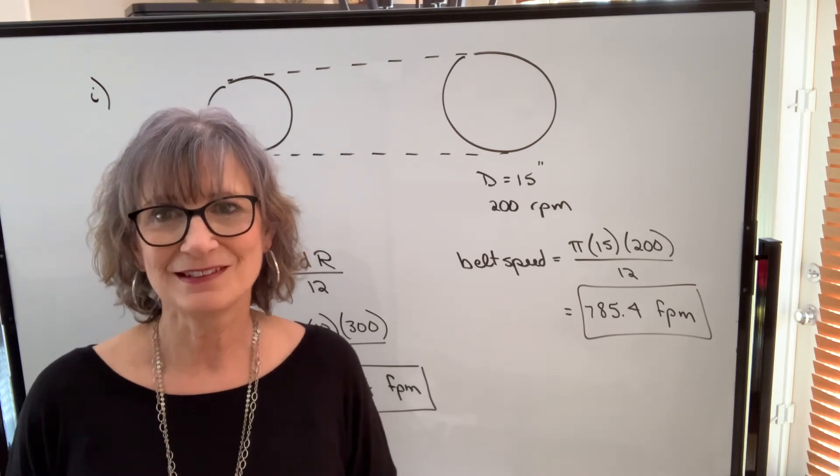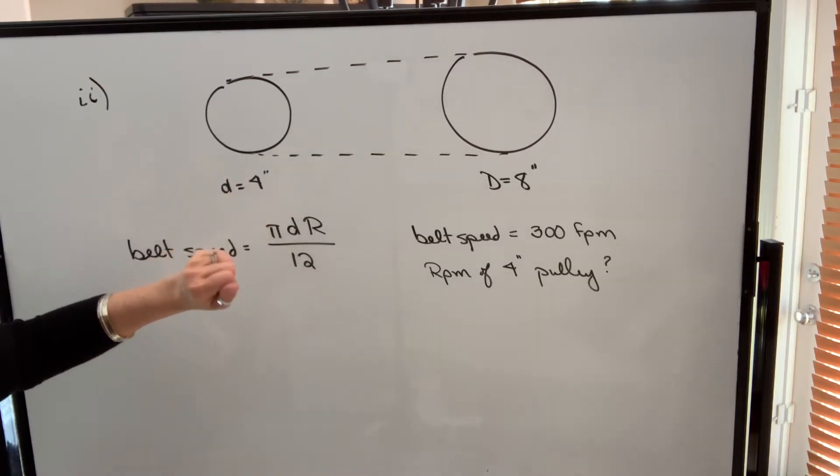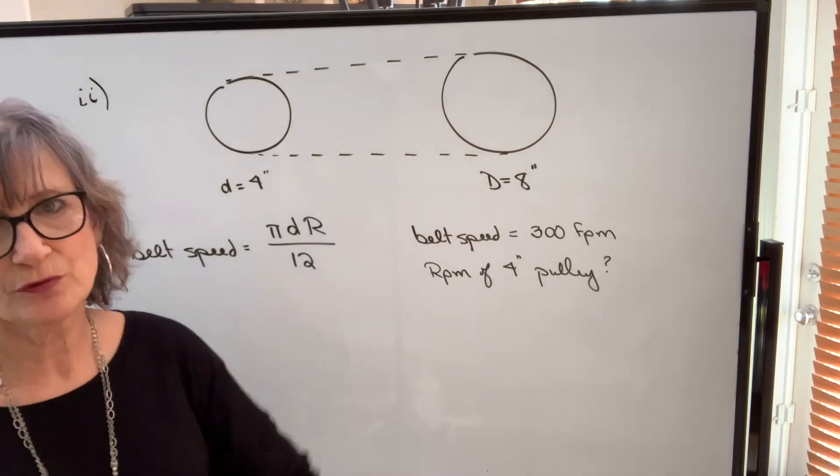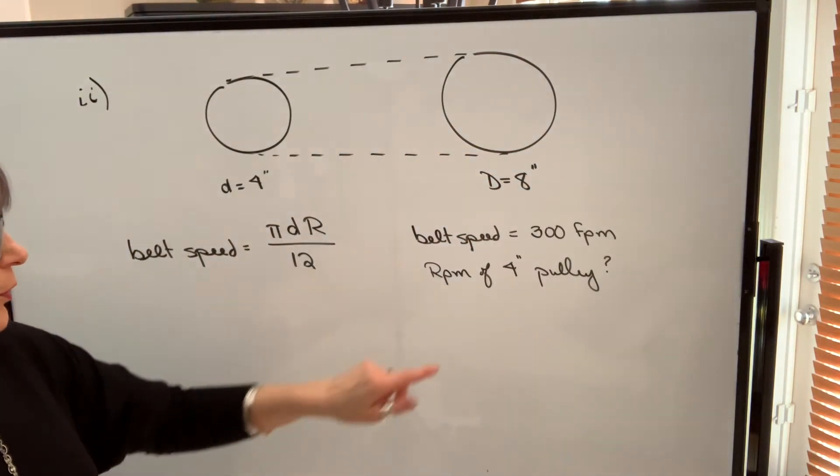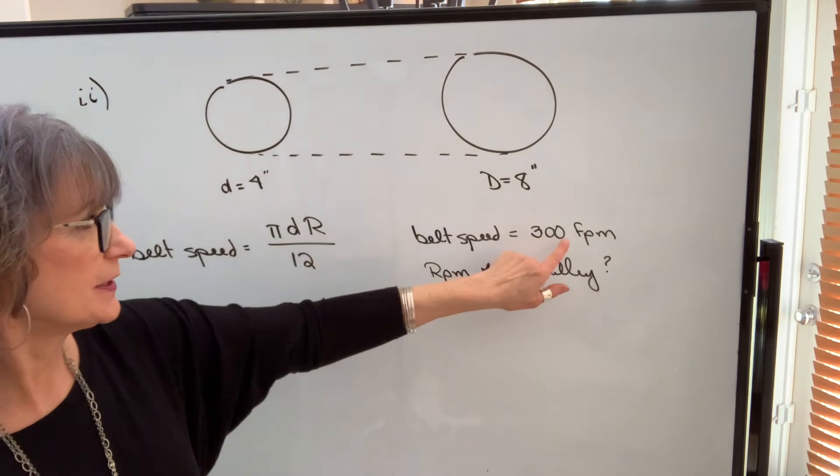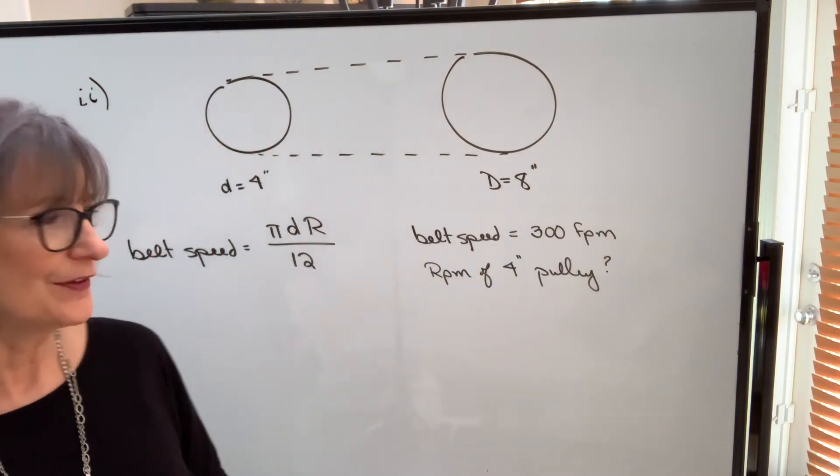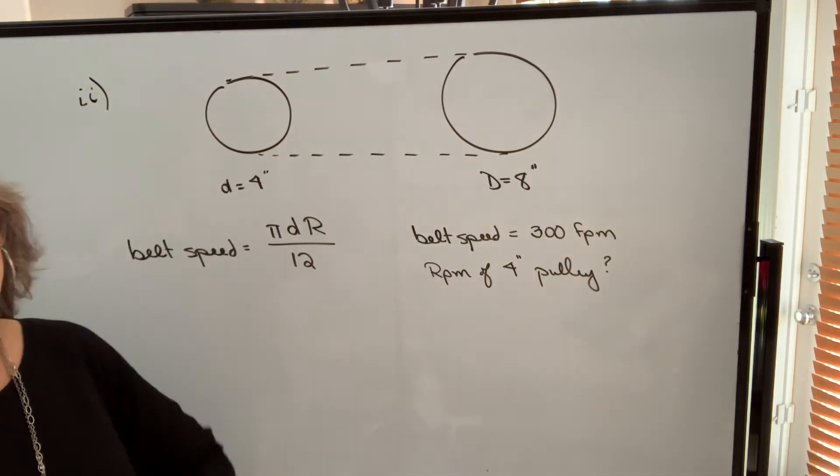Let's do a question where we're given the belt speed and we want to find either the diameter or the RPM. In this example, we know this diameter is 4 inches, we know this pulley has a diameter of 8 inches. We're told the belt speed is 300 feet per minute and the question asks us to find the RPM of the 4 inch pulley.